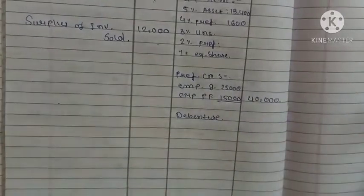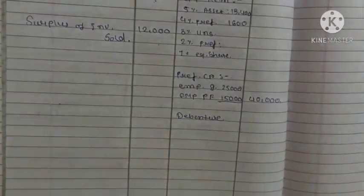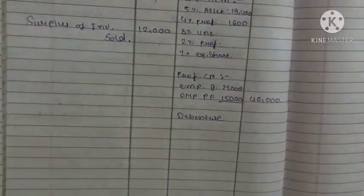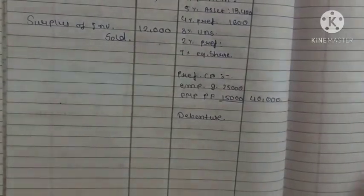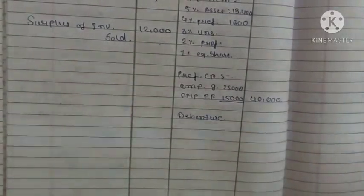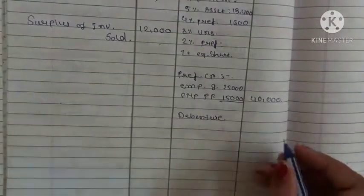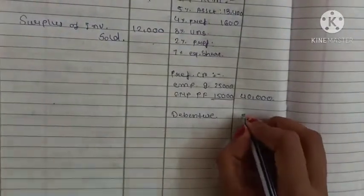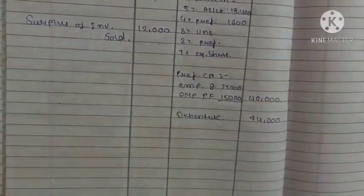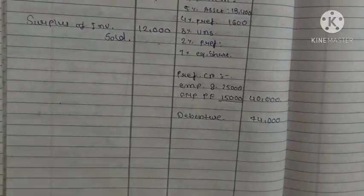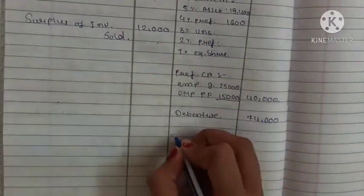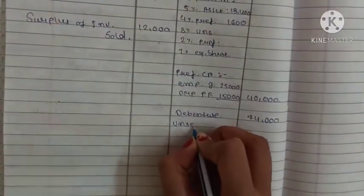Debentures here are 74,000. No interest percentage is given and no outstanding date is given, so we write debentures at 74,000 as is. After paying debentures, unsecured creditors come.